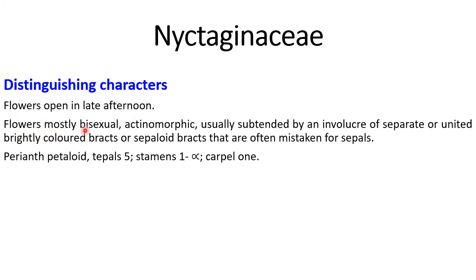Flowers are mostly bisexual and actinomorphic. They are usually subtended by an involucre of separate or united, brightly colored bracts — petaloid bracts that are often mistaken for sepals. Perianth is petaloid. Tepals are 5. Stamens are 1 to many, but carpel is 1 in number. These are some of the distinguishing characters of the family.